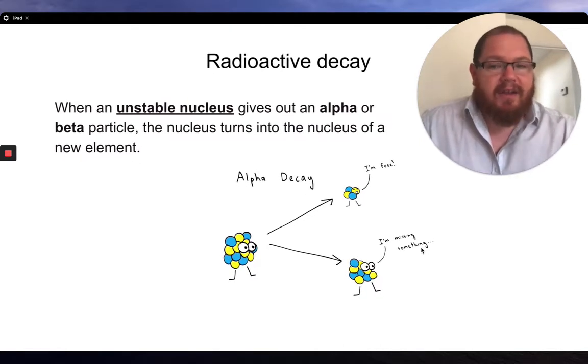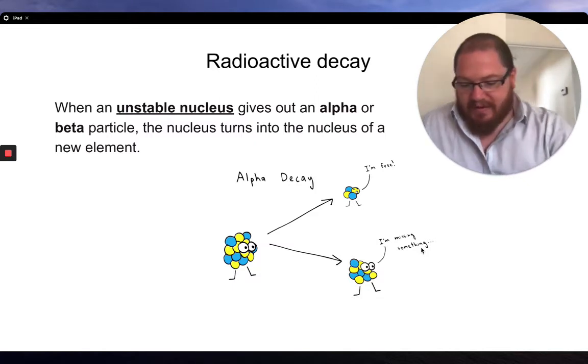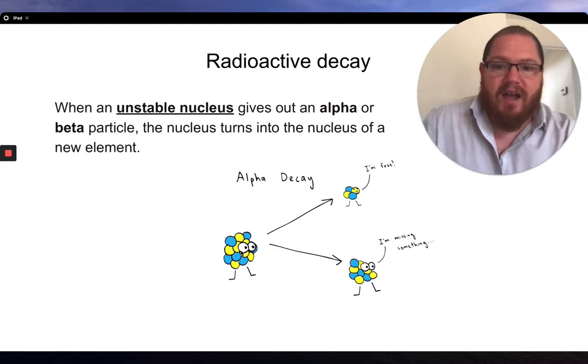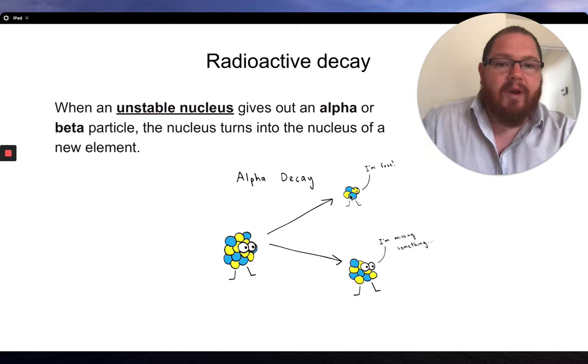Radioactive decay, that second question: when unstable nucleus give out alpha or beta particles, they turn into a new element. I just want to highlight here, you've got, you start with a radioactive element. It's going to get rid of, in this case, this is an alpha decay, because it's got two blues, two yellows, two protons, two neutrons. And it's going to, because it's lost some of its neutrons and protons, it's going to actually turn into a new element here.